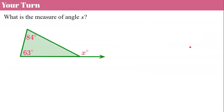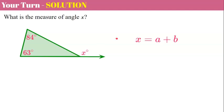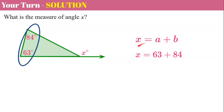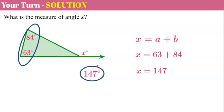Now it's your turn. I would like you to use that theorem to find the measure of this exterior angle. Please pause the video now and come back when you're ready. Welcome back. So we're going to start with our exterior angle theorem: X is equal to the two remote interior angles, the non-adjacent ones. So 84 plus 63 is going to equal our exterior angle X. When we add those together we get 147. So our exterior angle X is 147 degrees.